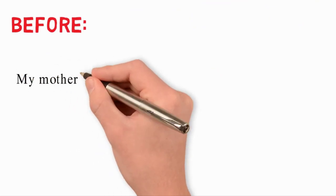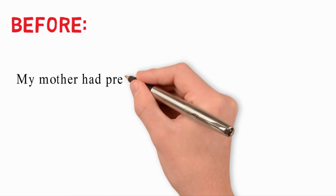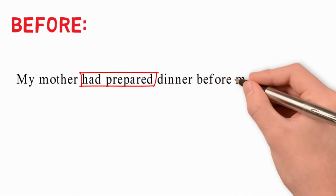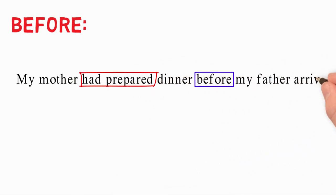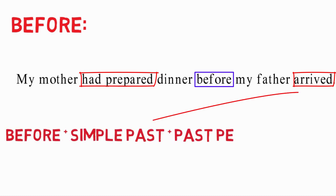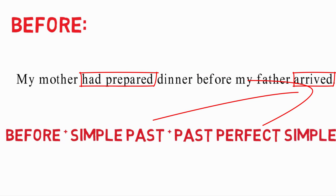For example: 'My mother had prepared dinner before my father arrived.' Here, 'before' is followed by a simple past as the second verb, while the first verb uses the past perfect simple.